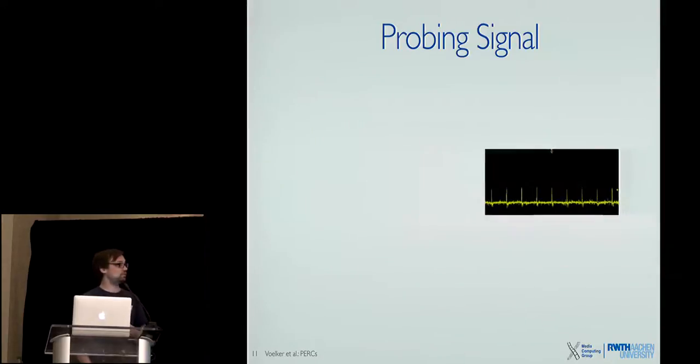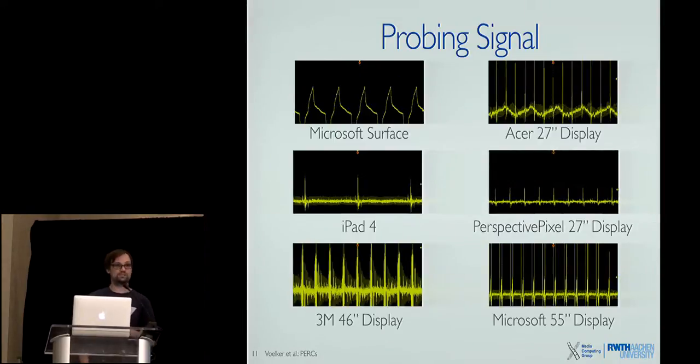If you look at the scan lines they have a nice peak which can easily be detected by some edge detection, very simple electronics, and they have a fixed frequency which can also be used to determine if you're on the screen or not. If you look at multiple scan lines for multiple screens you see they're kind of different but each of them have a clear peak and a fixed frequency. We can actually detect on which screen we are currently placed.